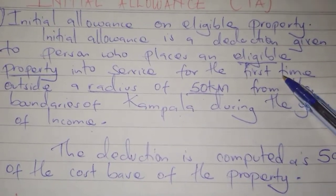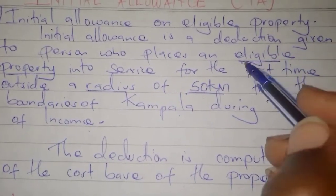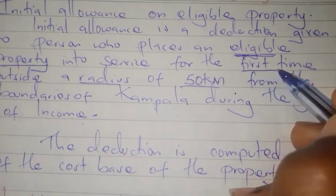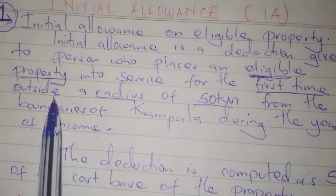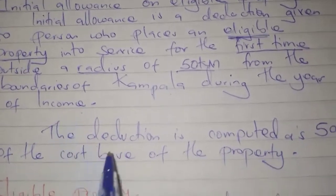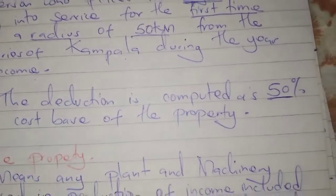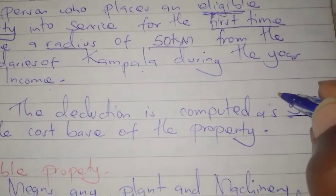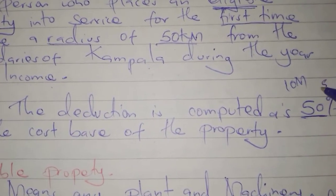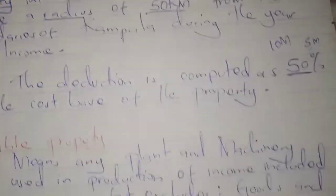The property has to be eligible and placed into service for the first time, outside a radius of 50 kilometers from the boundaries of Kampala during the year of income. The deduction is computed as 50% of the cost base of the property. For example, if the cost of the property is 10 million, the initial allowance will be 50% of 10 million, which is 5 million.